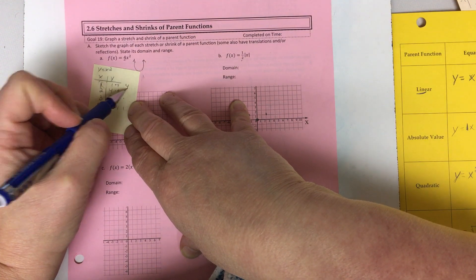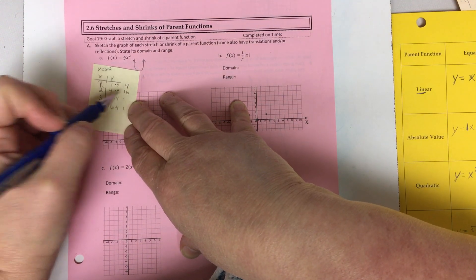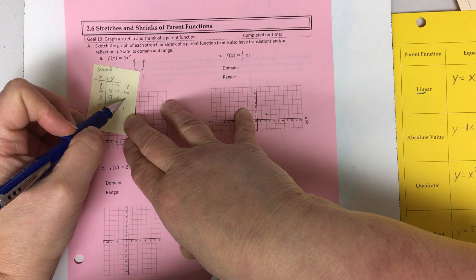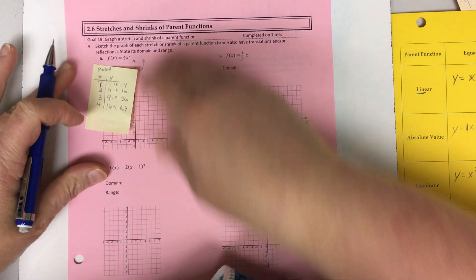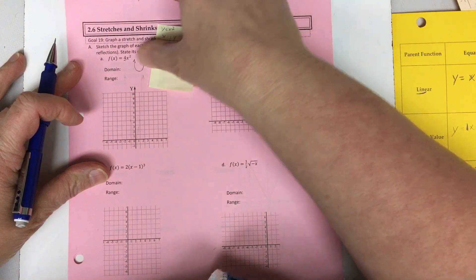So now one times four is four, four times four is sixteen, nine times four is thirty-six, sixteen times four is sixty-four. So let's go ahead and plot some of those.